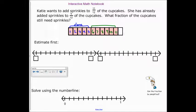So, it wants us to estimate first. Okay. So, here is zero, and there's one. And, we've got five-twelfths. One-twelfth. Two, three, four, five-twelfths.